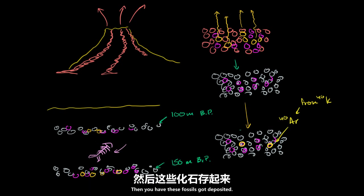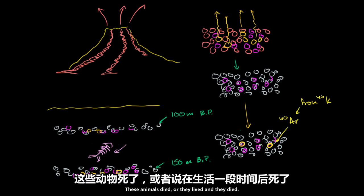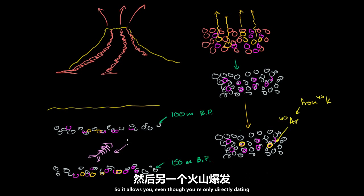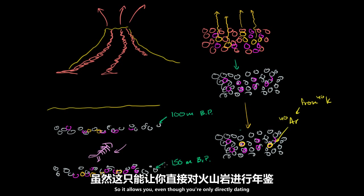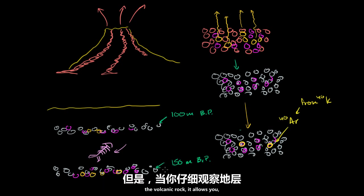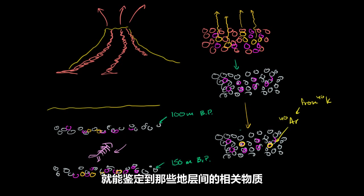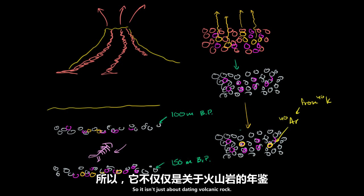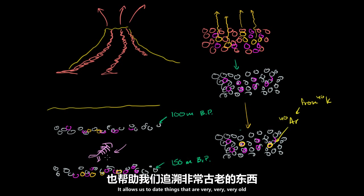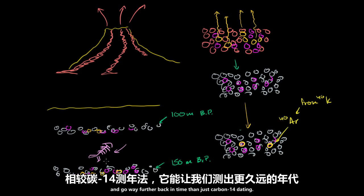This event happened, then these animals lived and died and the fossils got deposited, and then you had the other volcanic event. So it allows you, even though you're only directly dating the volcanic rock, to relatively date things in between those layers. It isn't just about dating volcanic rock — it allows us to date things that are very, very old and go way further back in time than just carbon-14 dating.